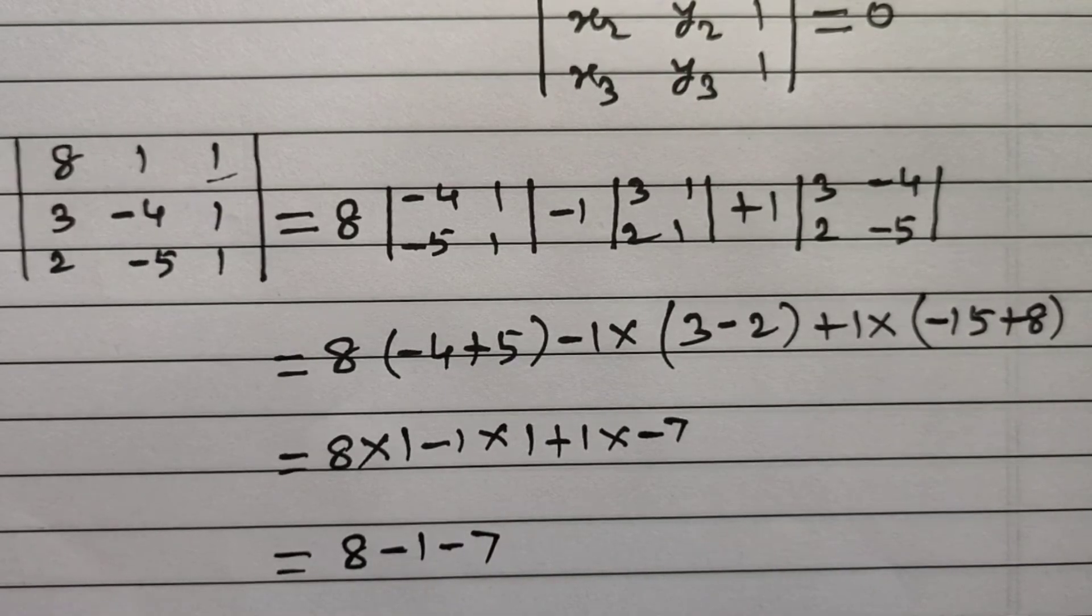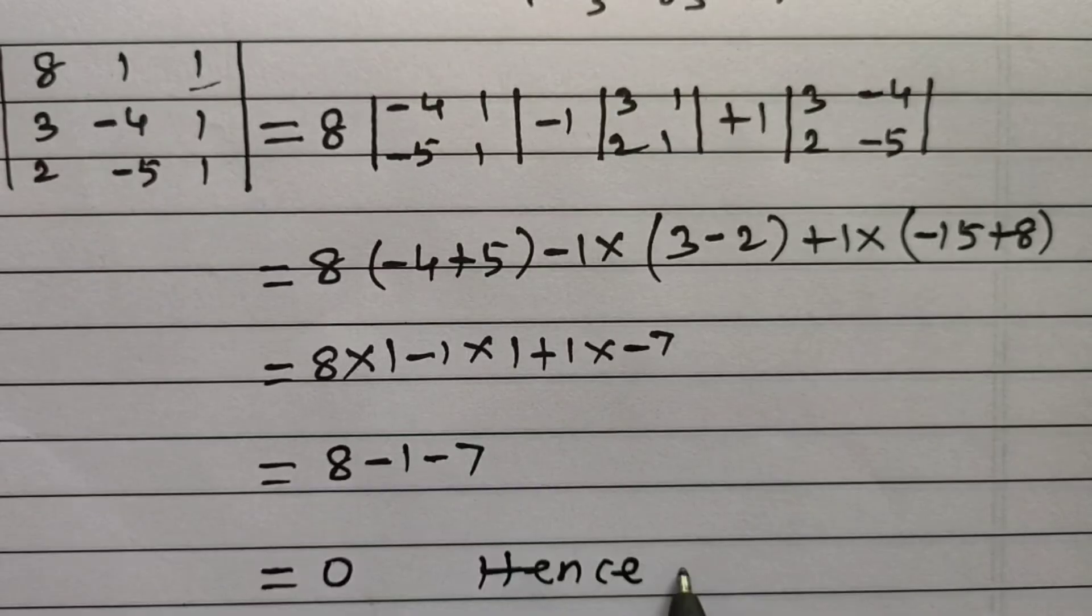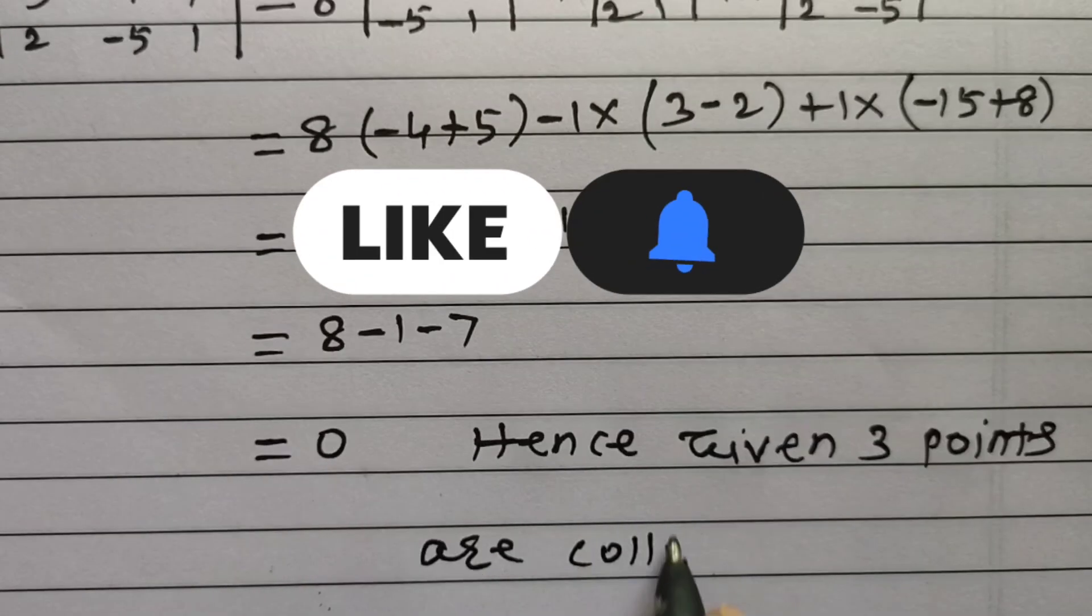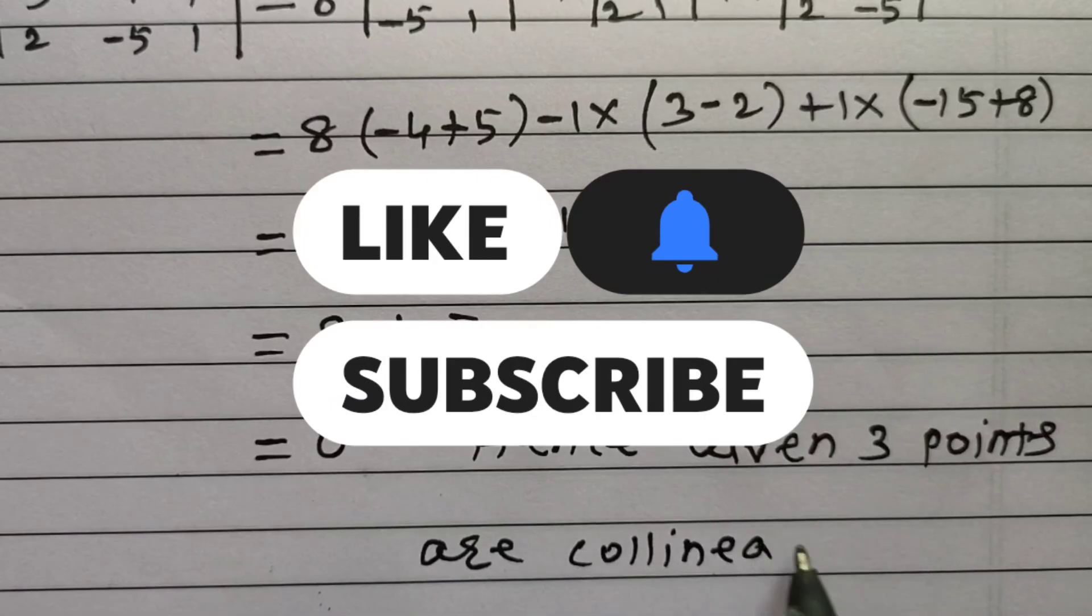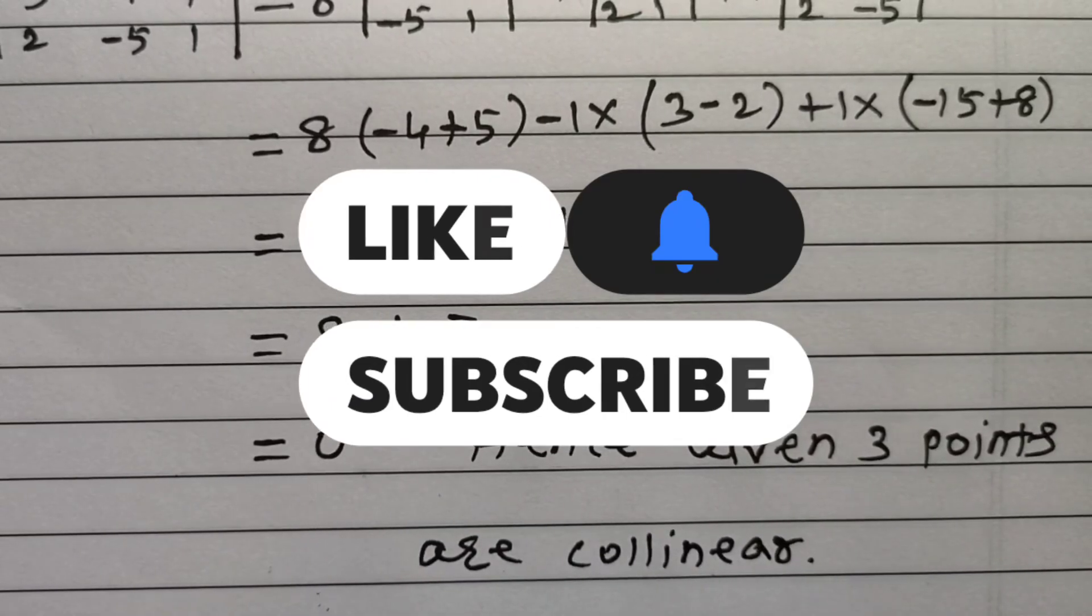This is equal to 0. Hence, we can write, the given 3 points are collinear. Collinear means lying on the same straight line. Hence, the solution.